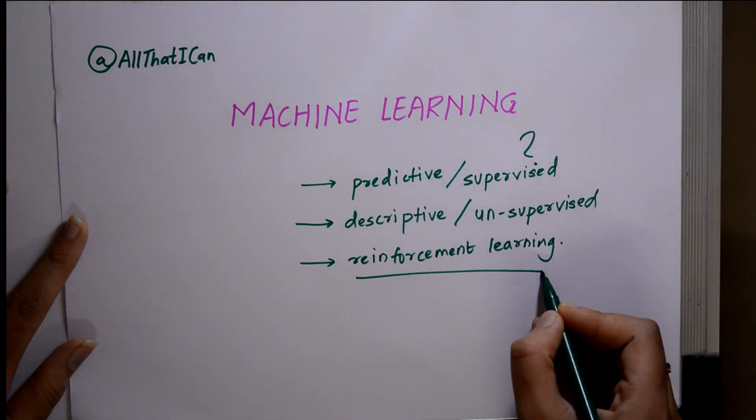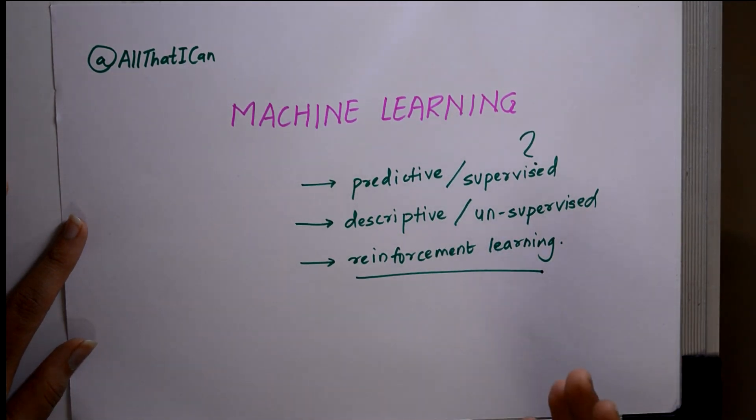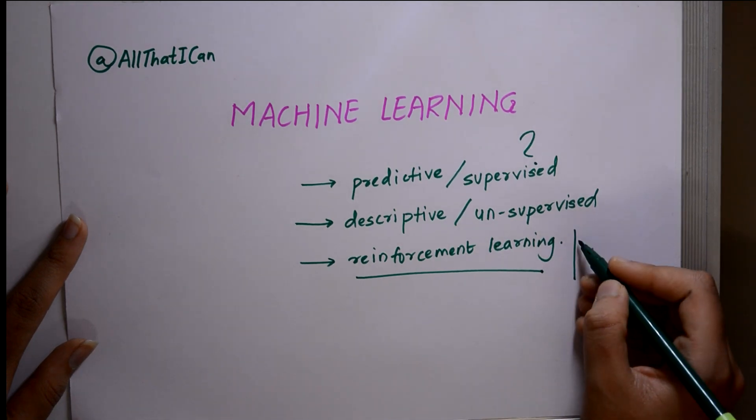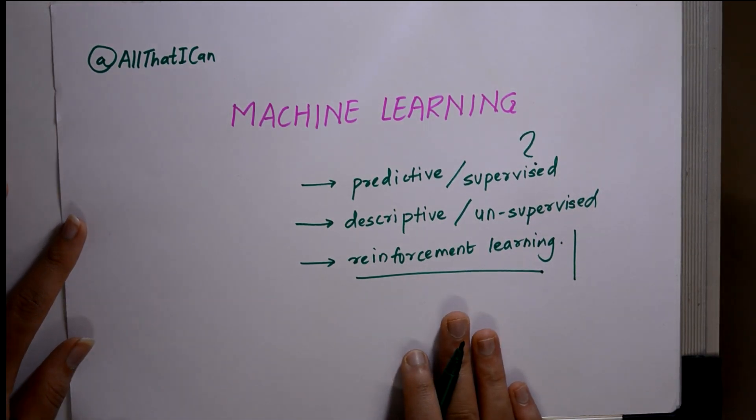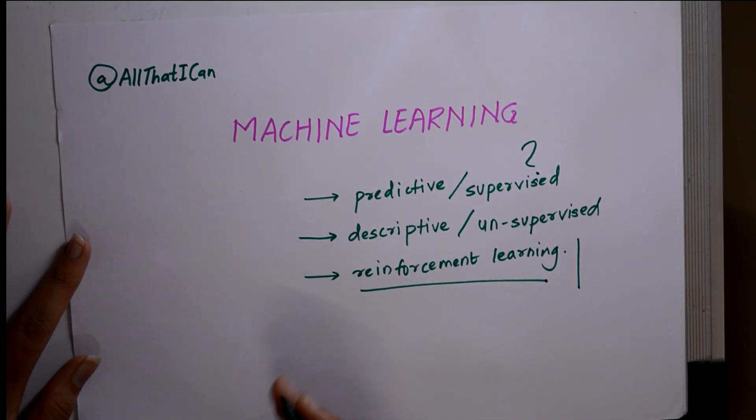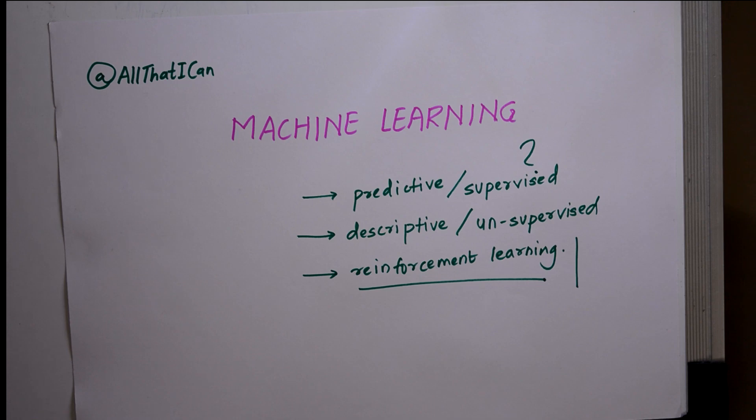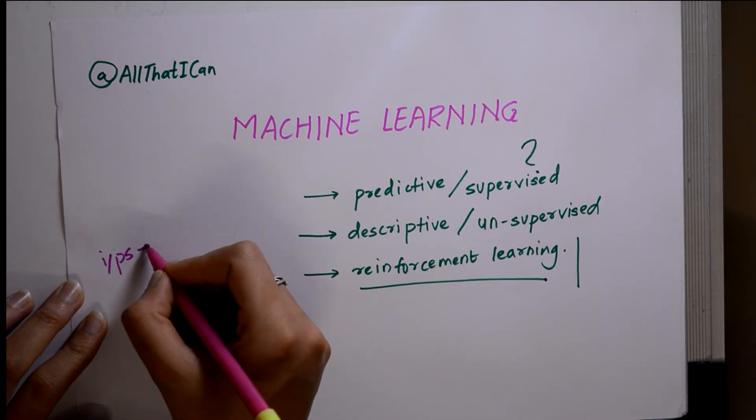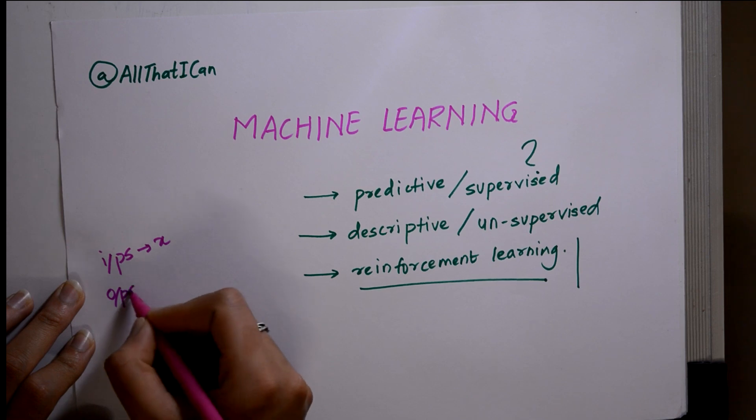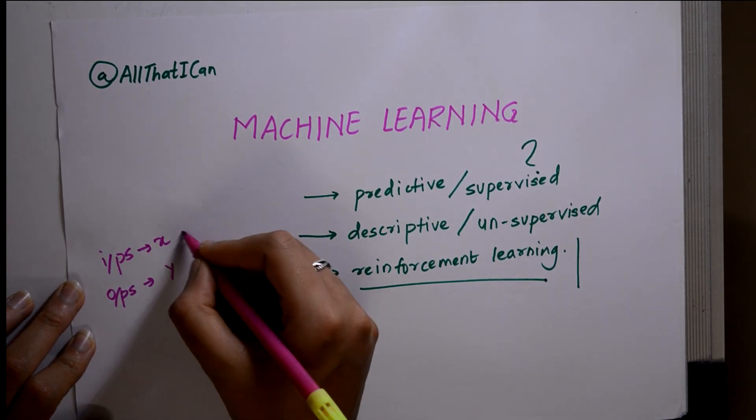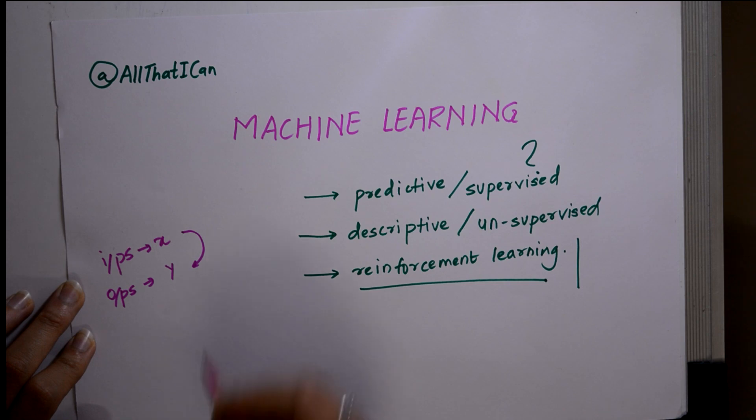Reinforcement learning, I won't say it's not much used, but we are not going to talk in much detail about reinforcement learning. Now going to predictive or supervised learning. What is predictive learning? Predictive learning is mapping of inputs to outputs. So mapping between these two is what we define by predictive or supervised learning.